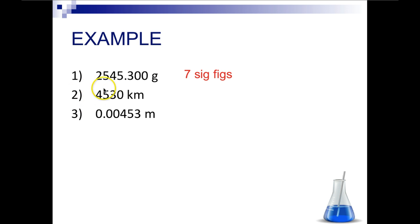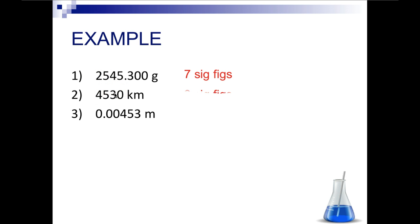Let's look at number 2. We start on the left. We do not have a decimal, so that zero at the end is not going to count — remember our rules. So in this number we have 1, 2, 3 significant digits.